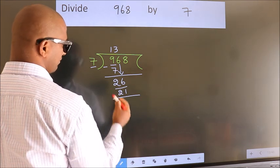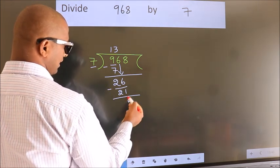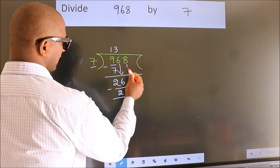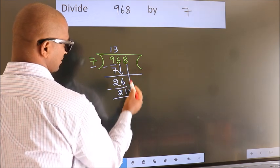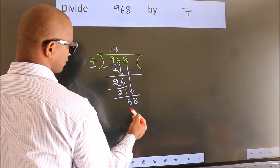Now we subtract and get 5. After this, bring down the beside number. So 8 down, making 58.